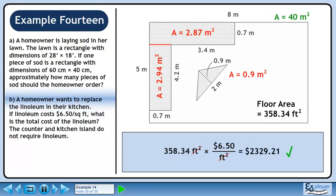358.34 times 6.50 is 2,329.21. The units of square feet cancel out, leaving dollars. So, the cost of the flooring is $2,329.21.